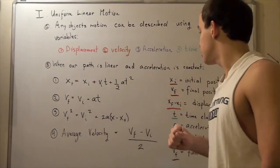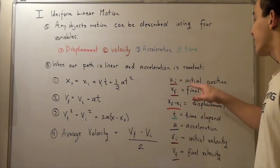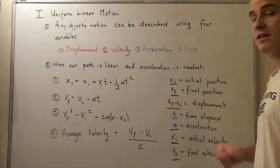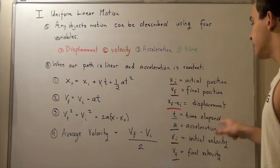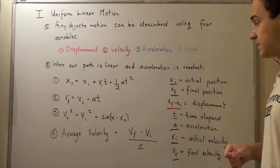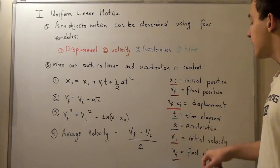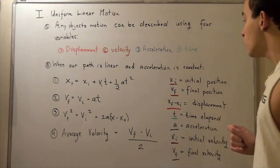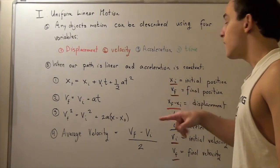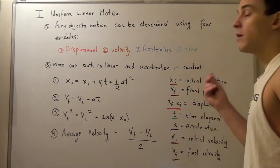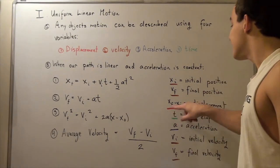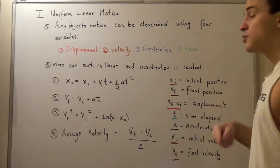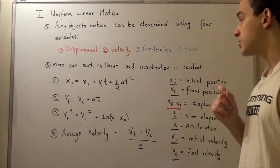In each equation, xi is our initial position, xf is our final position, and xf minus xi is our displacement. The variable t is time elapsed, a is acceleration, and vi and vf are initial and final velocity. Note that xi and xf are not distance — they are the position of our object. Displacement has both magnitude as well as direction.